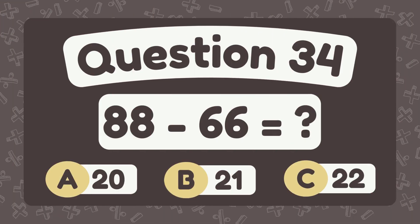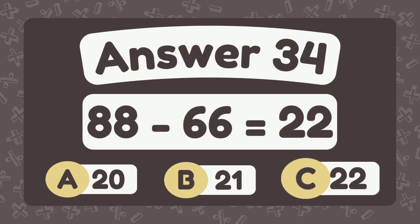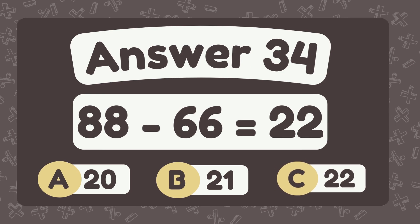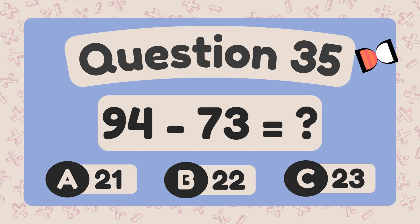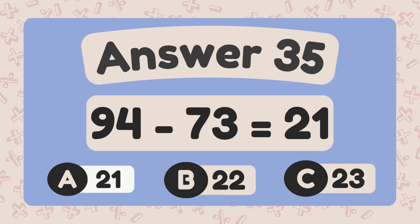What is eighty-eight minus sixty-six? The answer is twenty-two. What is ninety-four minus seventy-three? The answer is twenty-one.